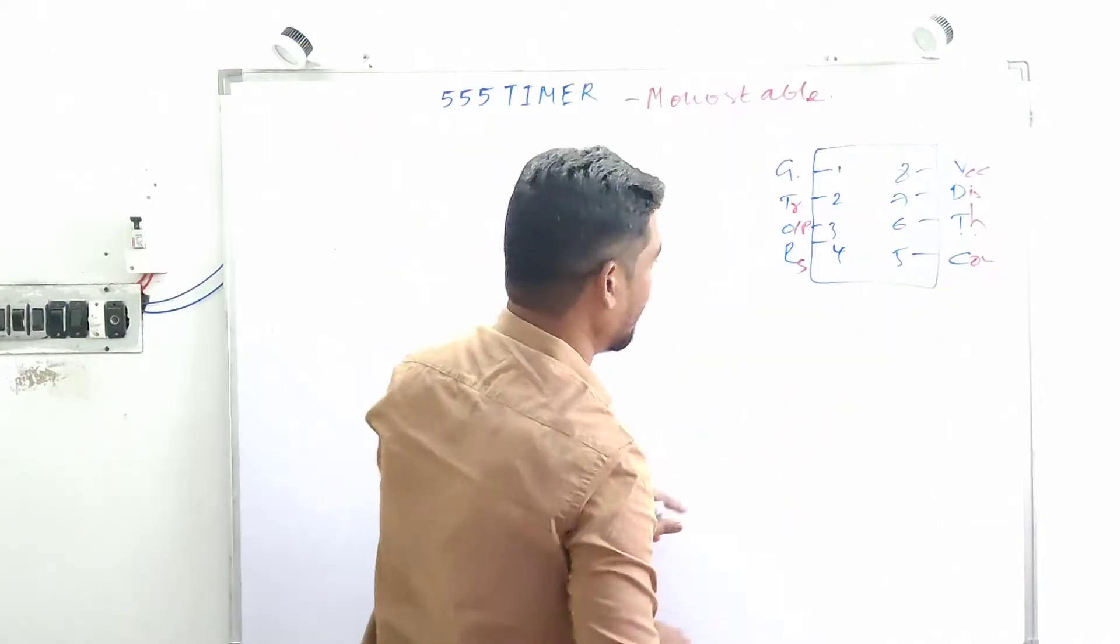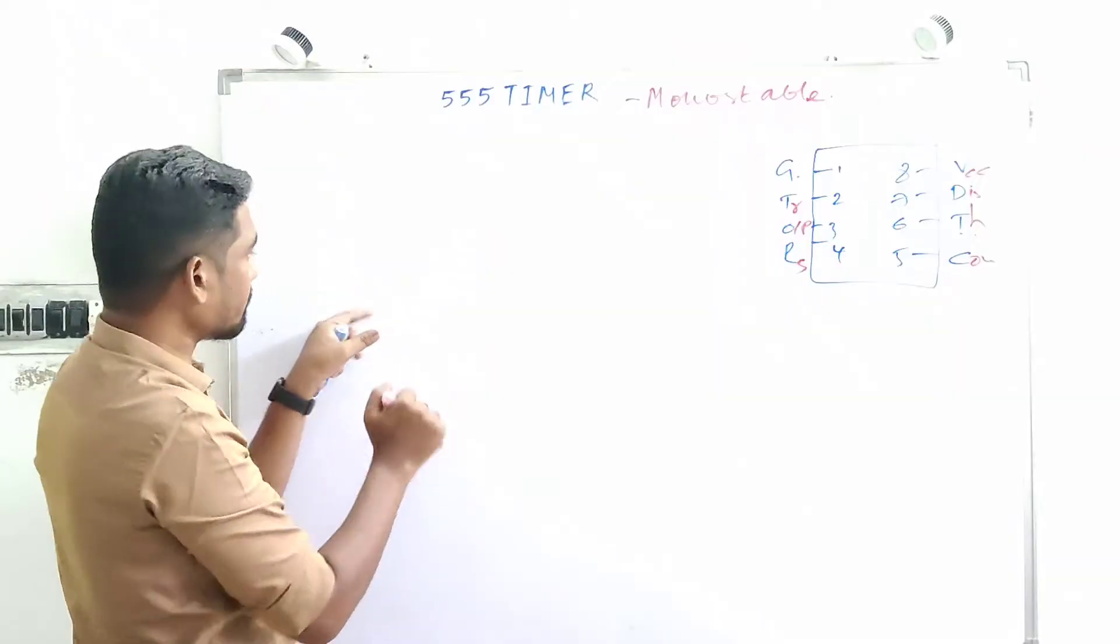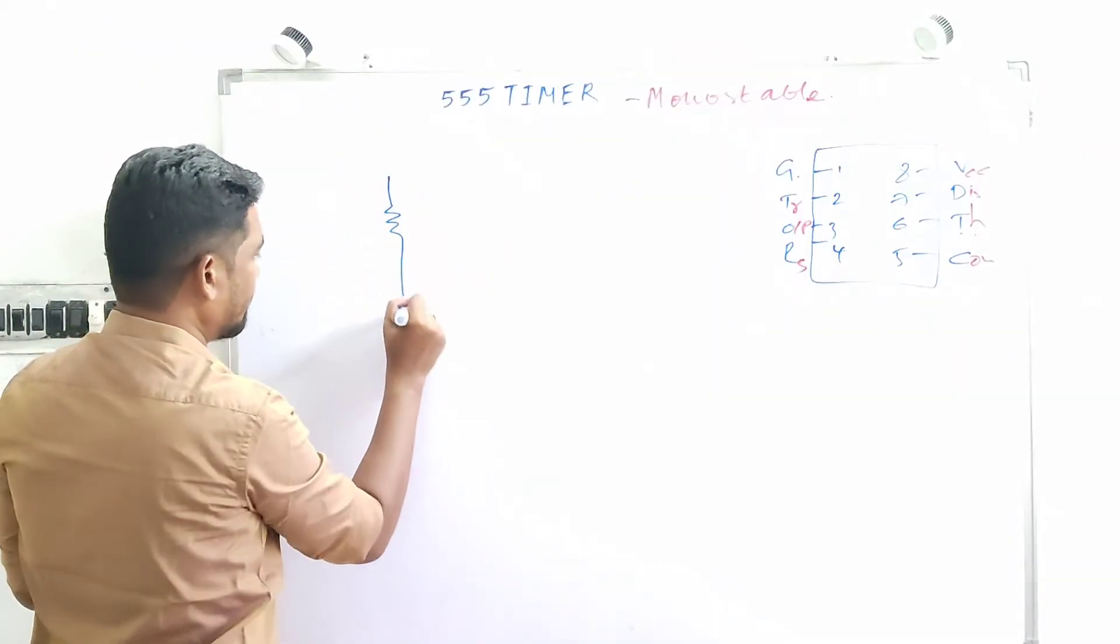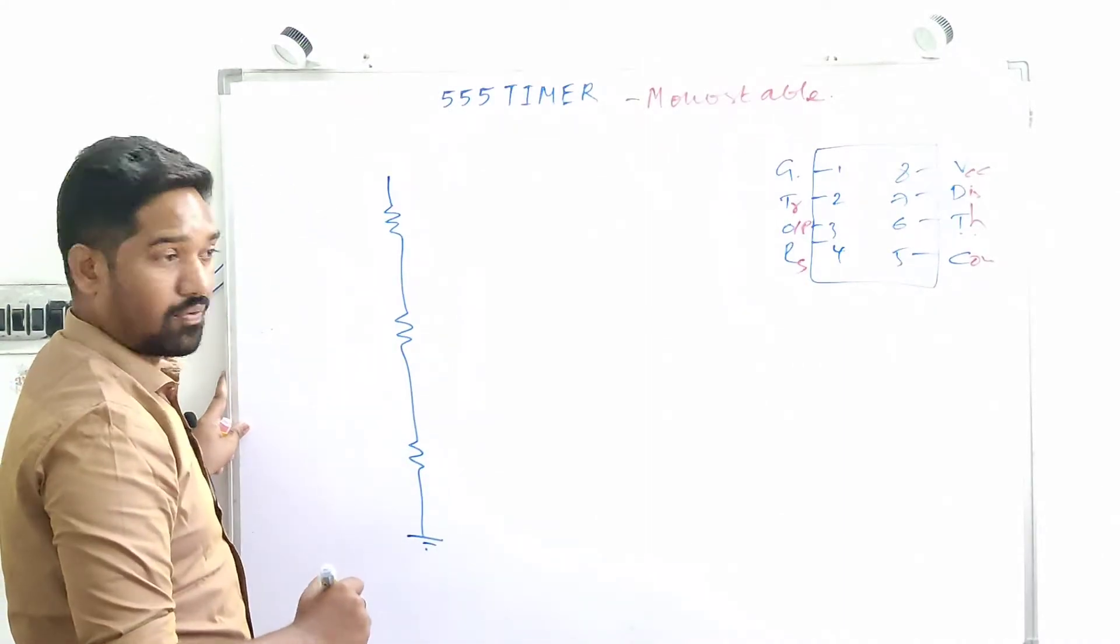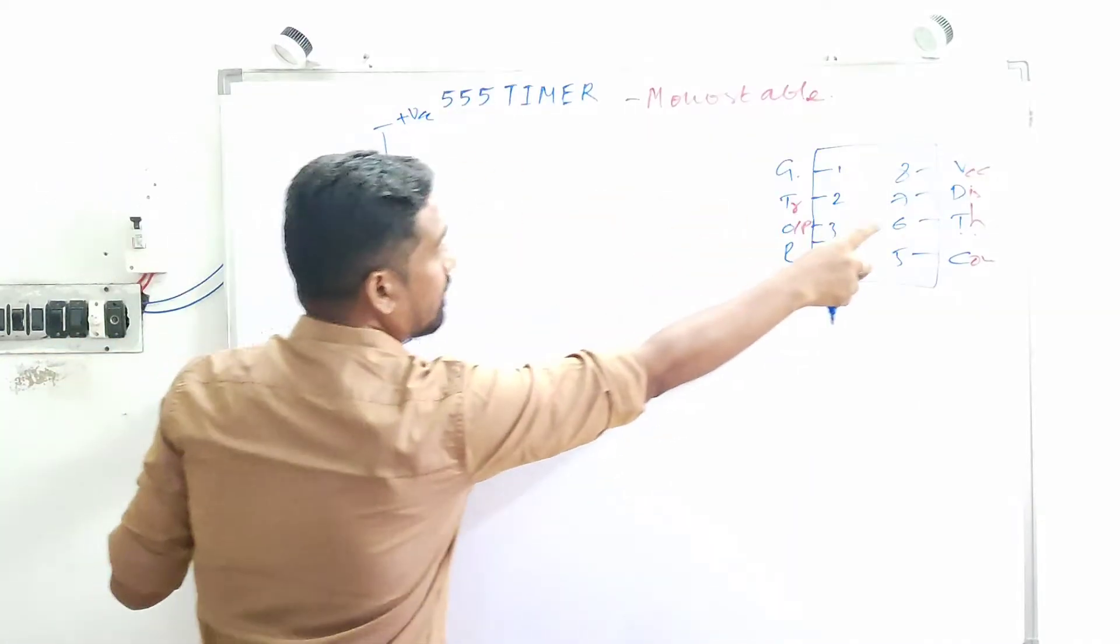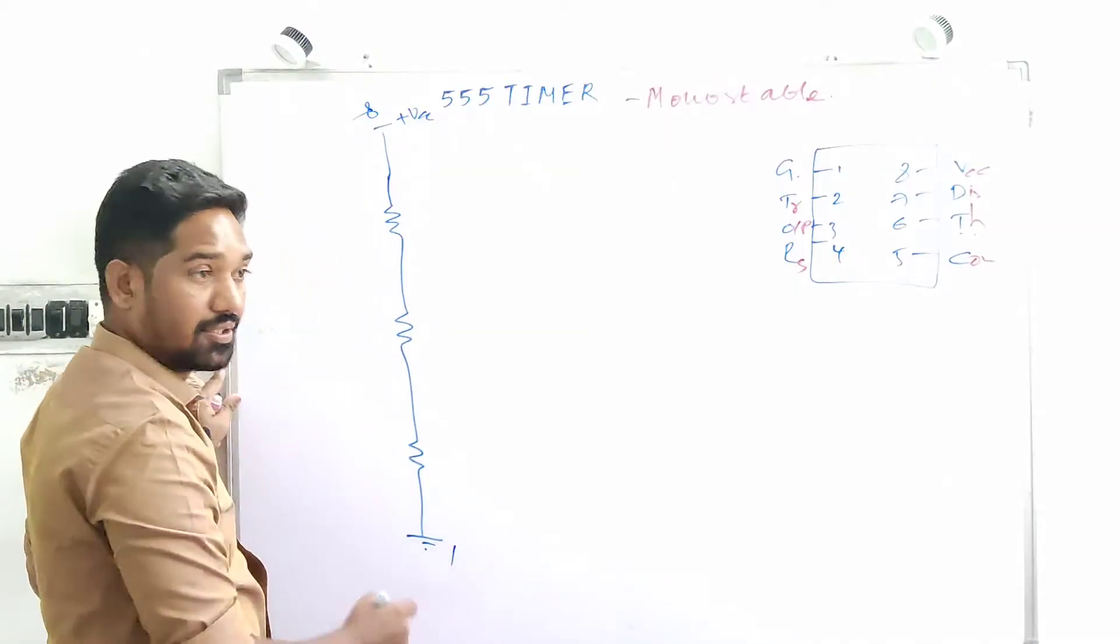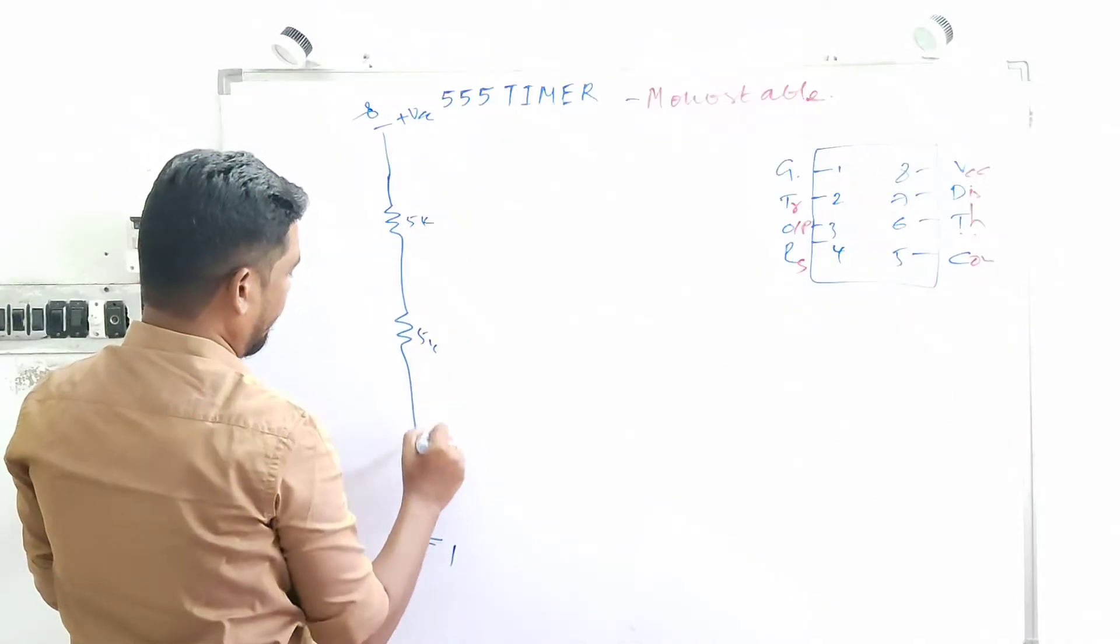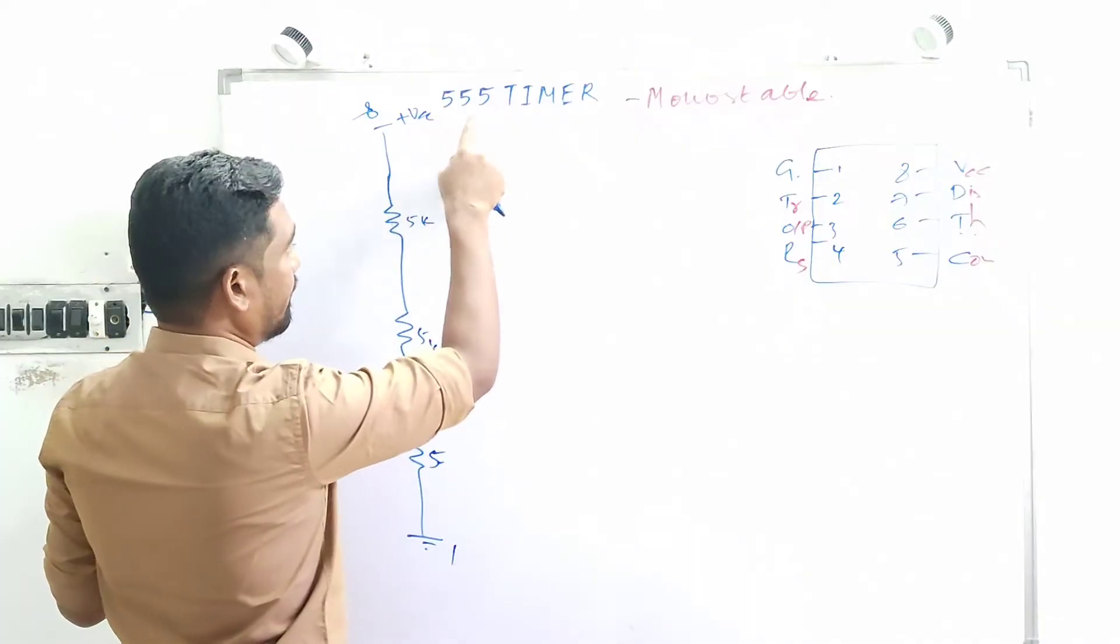Coming back to the 555 timer internal block, it goes like this. Three resistors in series like this, with the ground over here. Plus VCC, this will be pin number 8, and this is ground, this will be pin number 1. IC has 5k, 5k, and 5k. The triple 5, 5-5-5, triple 5 timer is the name.